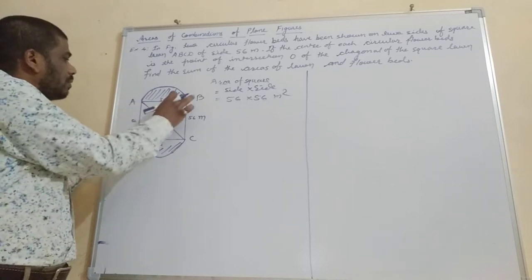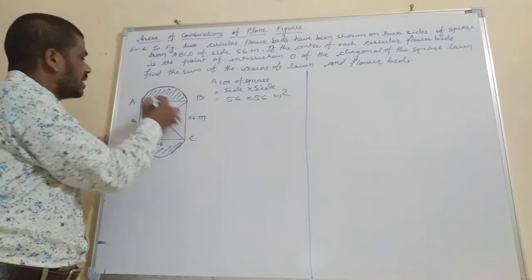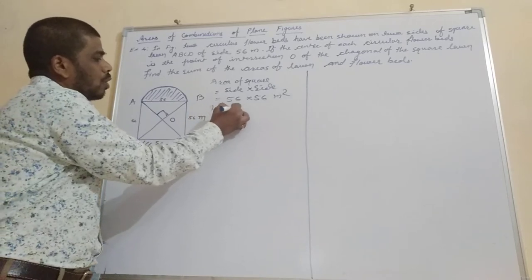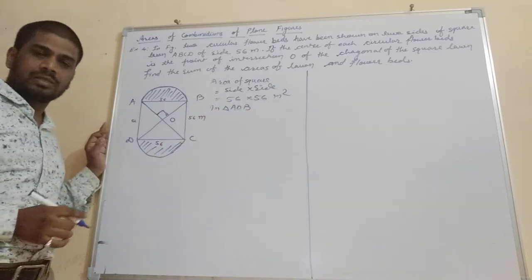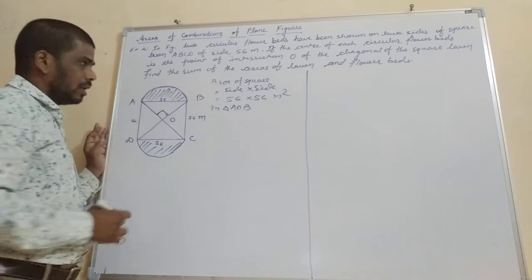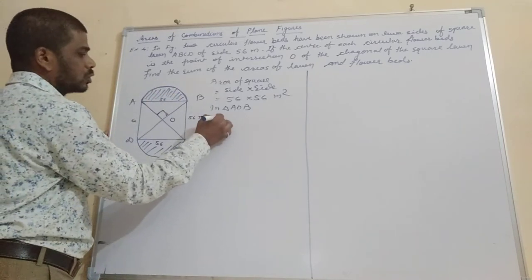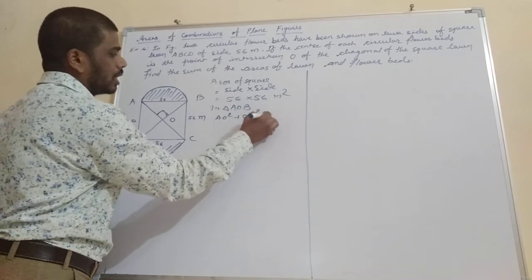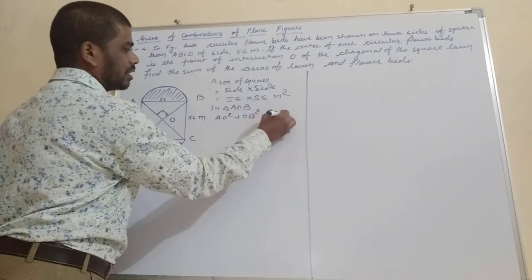Now we will apply the Pythagorean theorem in triangle AOB to find AO, which will be the radius of the sector. So: AO² + OB² = AB², by the right angle. This means X² + X² = 56², so 2X² = 56 × 56.